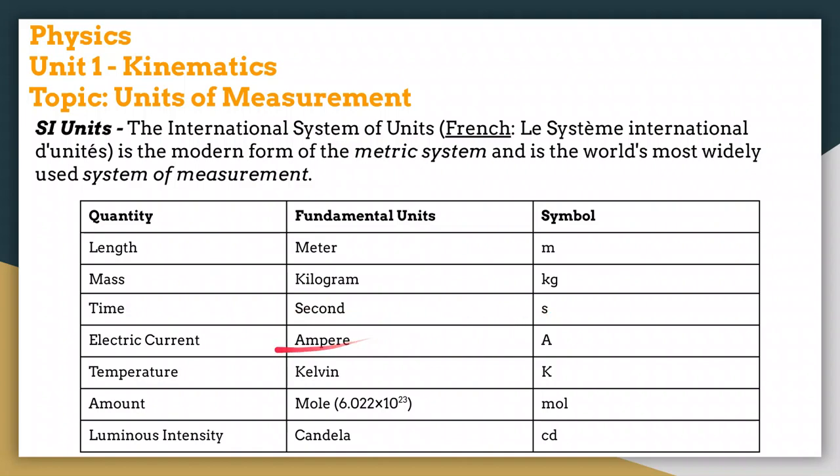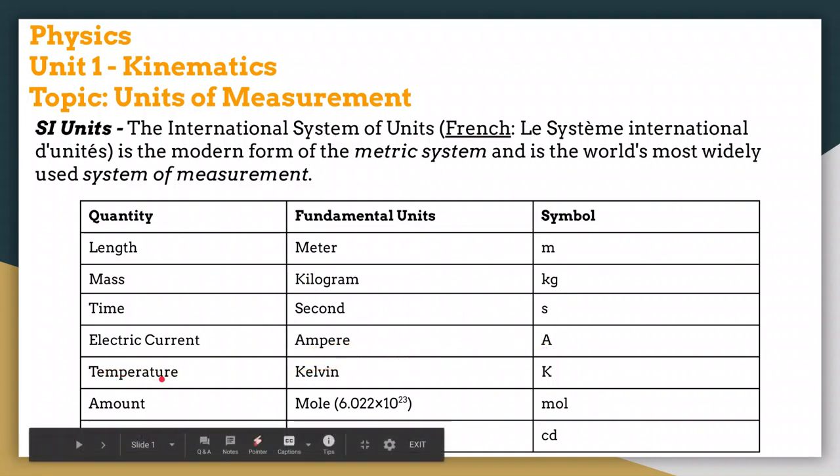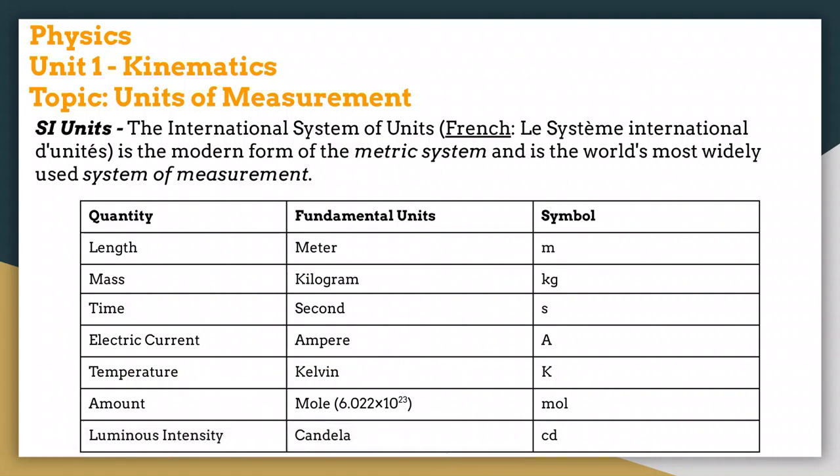Time is the second, which is a lowercase s. When we get to electricity, electric current, how many electrons are moving, is called an ampere, amps, A. Temperature in the SI system is measured in Kelvin, not Fahrenheit or Celsius. The symbol is K.